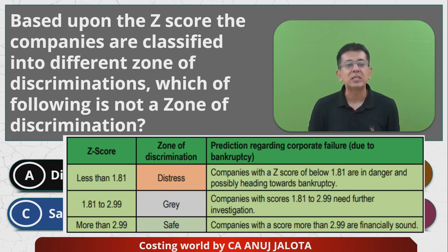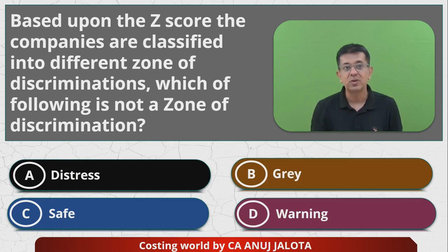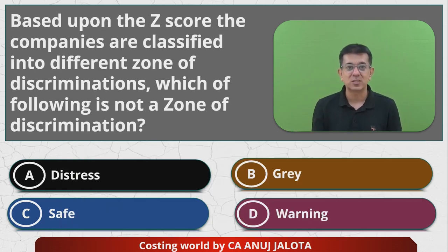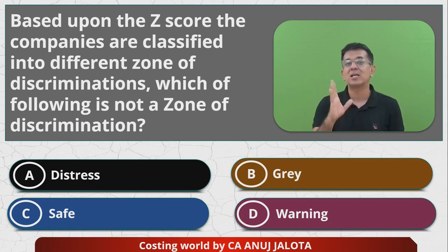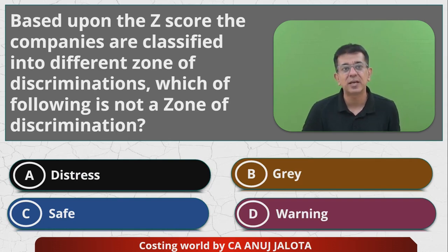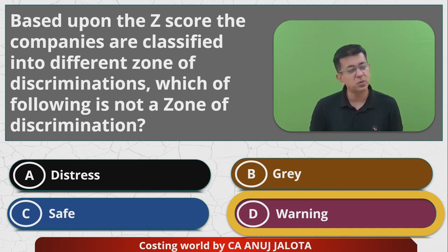These are the three classifications: distress, gray, and safe. So there is nothing called a warning zone as such. Out of the four options, warning does not come as part of the Z score zones. Therefore, that should be the correct answer, because warning is not a zone of discrimination. I'll see you all next time with another MCQ. Take care till then. Happy learning. Bye.